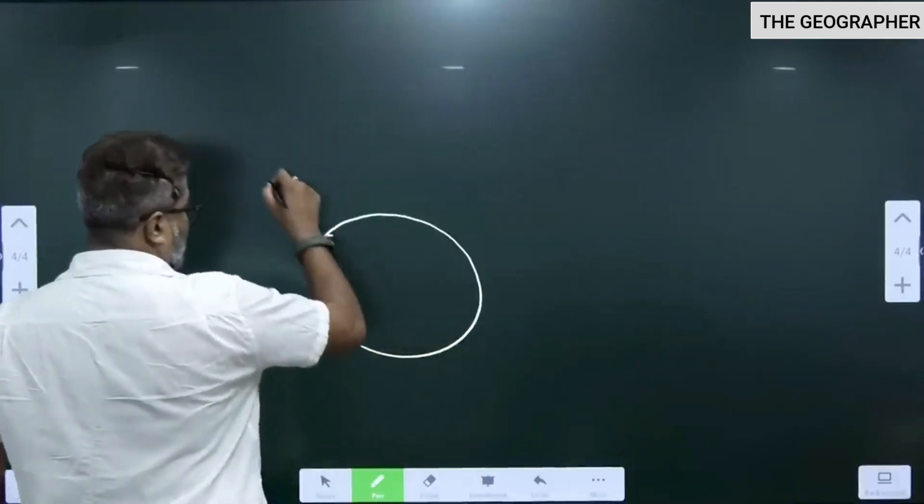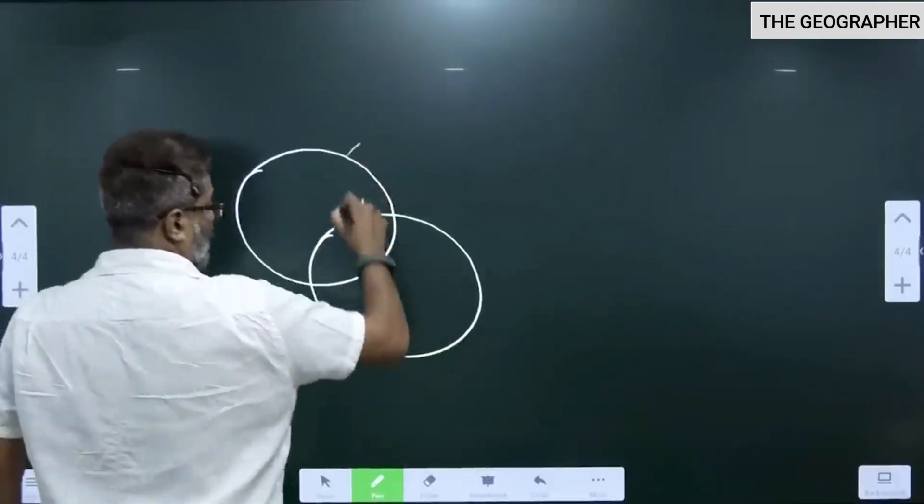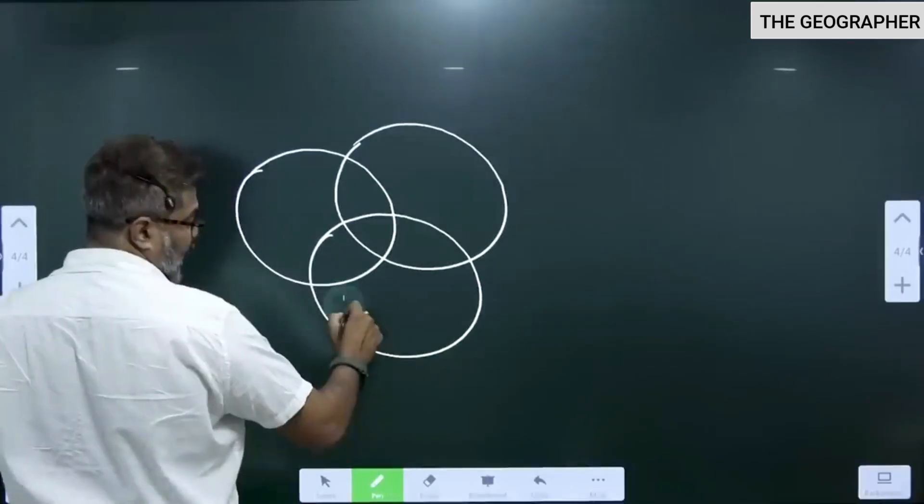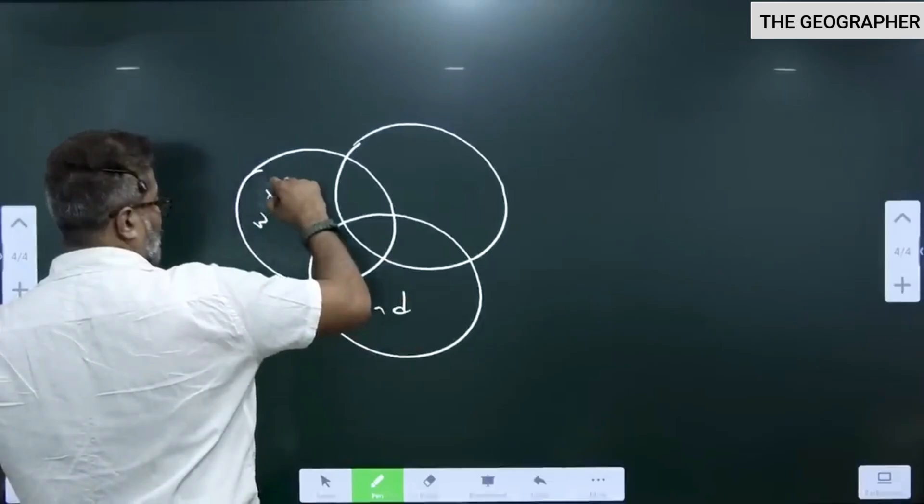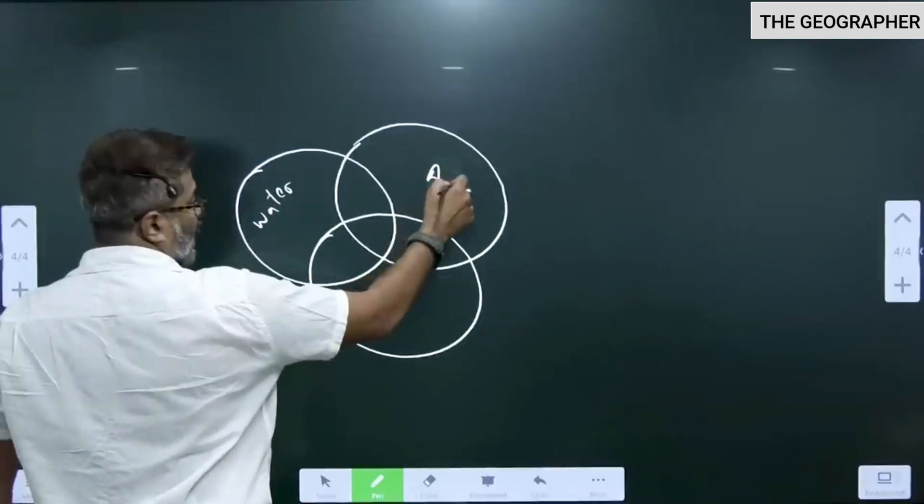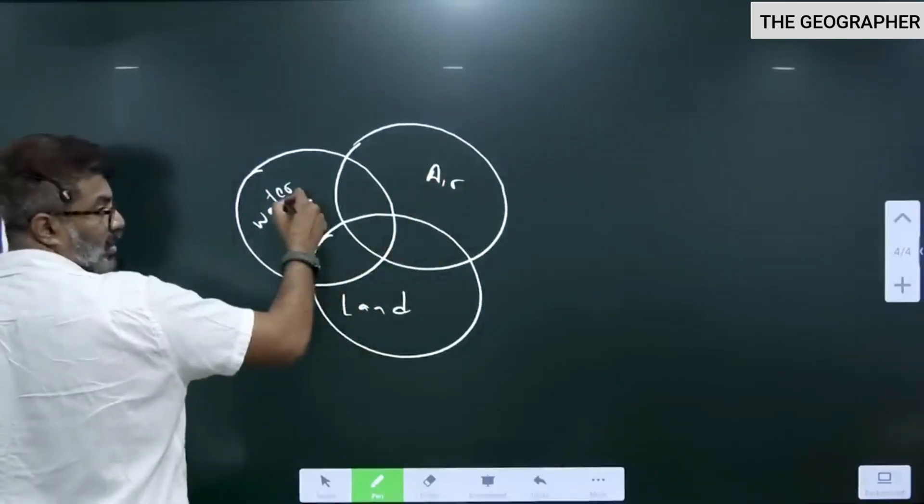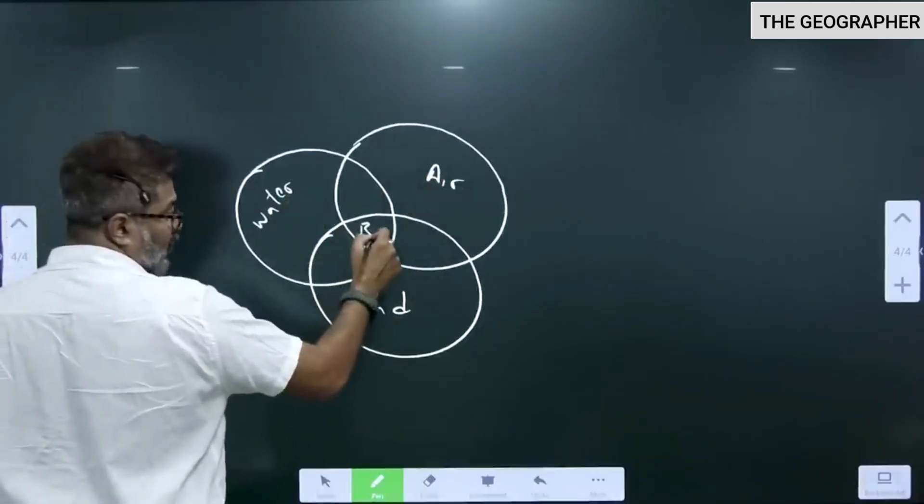All of you would have seen this Venn diagram in school. I will call this as land, this as water, this as air. Part of land, air, and water which supports life is bio.